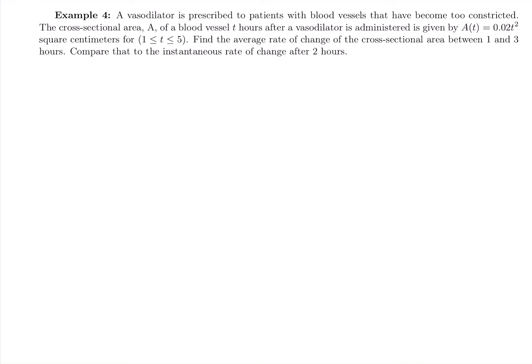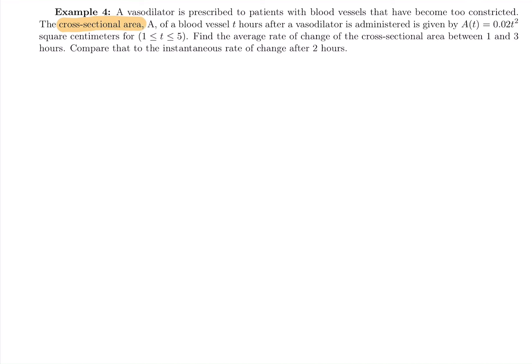So for this we have a vasodilator is prescribed to patients with blood vessels that have become too constricted. The cross-sectional area A, so there's one of our units here, of blood vessels t hours after vasodilator is administered is given by A of t equals 0.02 t squared. And this is in square centimeters for one to five hours. So we're given that interval from one to five.